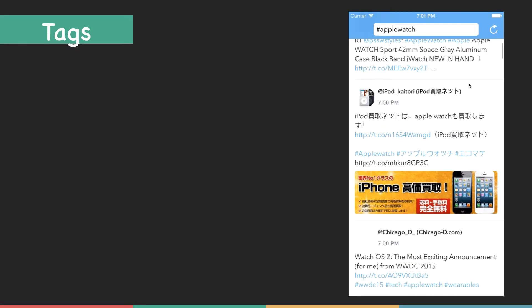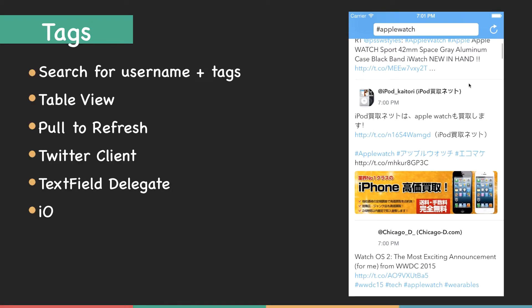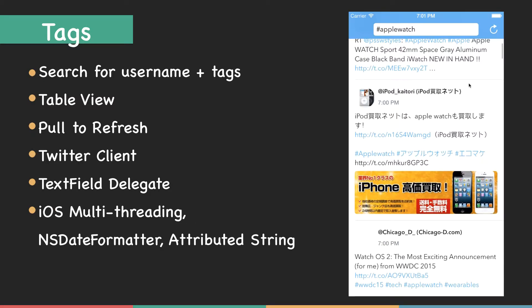Text is a Twitter client which we are going to build in this series. It has the feature to search for username and text. It has a text field on the top of the navigation bar where you can enter a username or some text, press enter, and search for tons of tweets from Twitter. We'll have a table view to display tweets and the feature to pull to refresh.